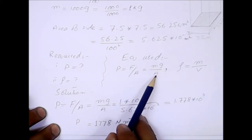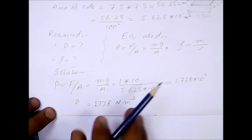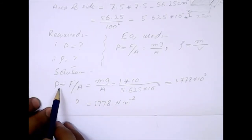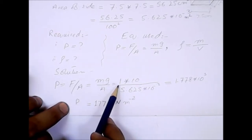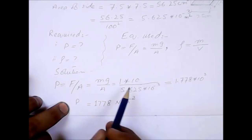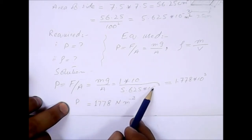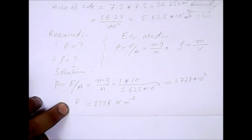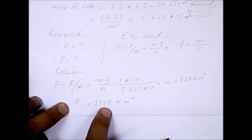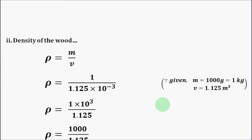Solution: pressure equals force over area, where force is mg divided by area. Mass is 1, g is 10, area is 5.625 × 10⁻³. Answer is 1.778 × 10³. So the final answer is P = 1.778 newton per meter square.